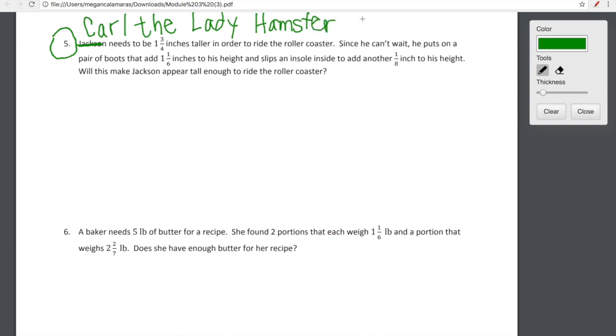Which is also our secret word, for those of you that missed the story about Carl the Lady Hamster. See me tomorrow, or Tanner, and we'll be happy to fill you in. So Carl the Lady Hamster, we're imagining, right? This isn't real life, we're being a little funny. So Carl the Lady Hamster needs to be one and three fourths inches taller in order to ride the roller coaster. Well, what should we use here? So Carl is actually a gentleman hamster, not a lady, so we'll keep the pronoun he. Since he can't wait, he puts on a pair of boots. So imagine that hamster putting on boots that add one and one sixth inches to his height, and slips an insole inside to add another one eighth of an inch to his height. Will this make Carl appear tall enough to ride the roller coaster? Interesting.